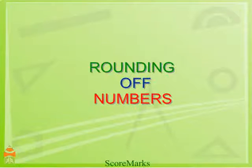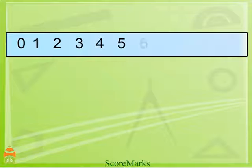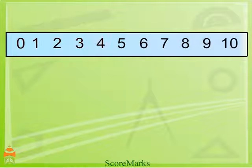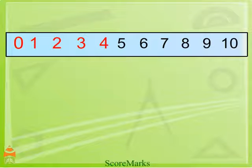Let us understand how to round off numbers. We see that the numbers 1, 2, 3, and 4 are nearer to 0. So we round off 1, 2, 3, and 4 as 0.